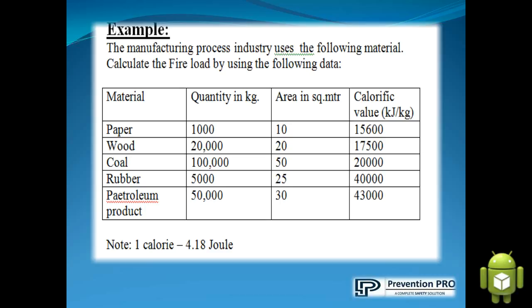Calorific value in kilojoule per kg are: 15,600; 17,500; 20,000; 40,000; and 43,000. Note: one calorie is equal to four point one eight joule.